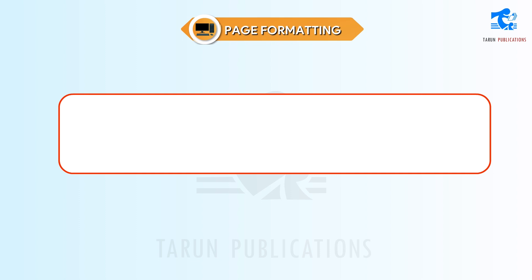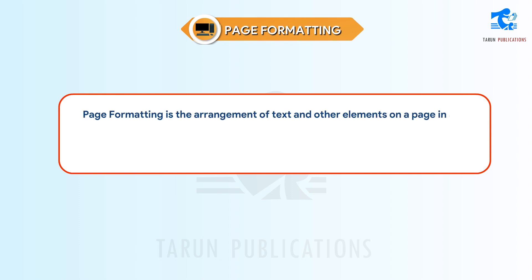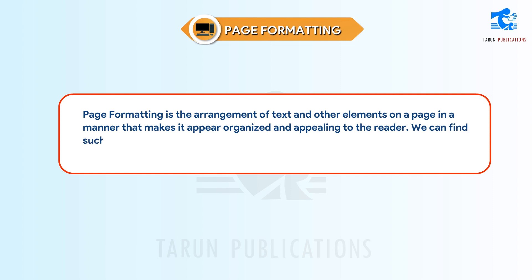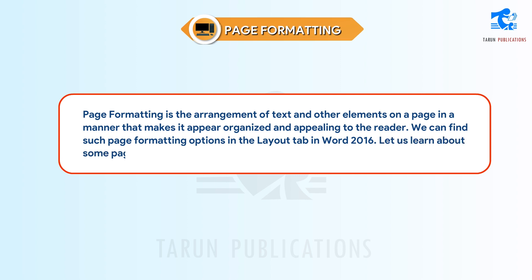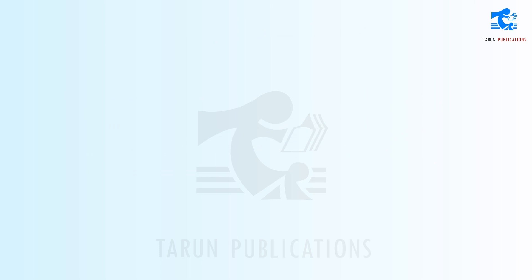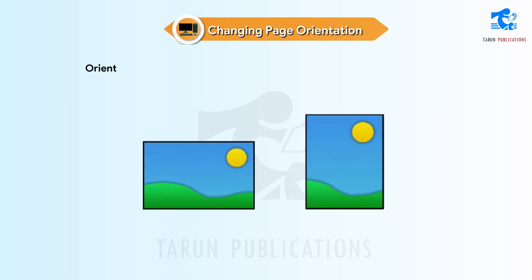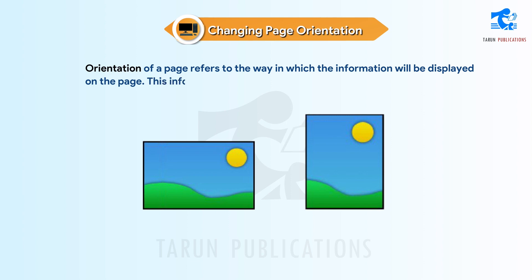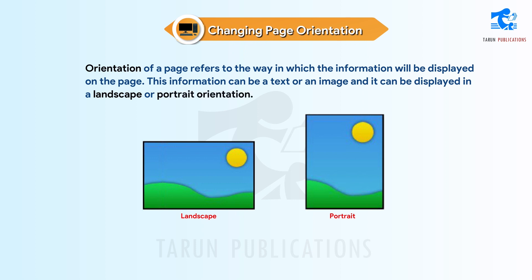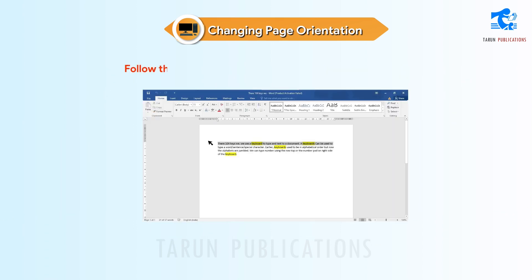Page Formatting. Page formatting is the arrangement of text and other elements on a page in a manner that makes it appear organized and appealing to the reader. We can find such page formatting options in the Layout tab in Word 2016. Let us learn about some page formatting tools. Changing Page Orientation. Orientation of a page refers to the way in which the information will be displayed on the page. This information can be text or an image and it can be displayed in landscape or portrait orientation. The default orientation in Word 2016 is Portrait.